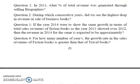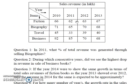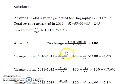Coming to the next question: during which consecutive years did we observe the highest drop in sales revenue of business books? For solving this question we are going to use the percentage change formula. By percentage change I refer to percentage growth as well as percentage reduction depending upon the question. It is a very important formula and is almost always required to solve DI questions in the NET exam. I recommend you learn this formula by heart.